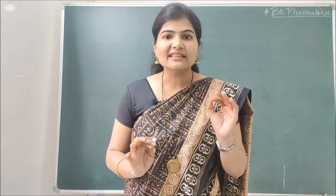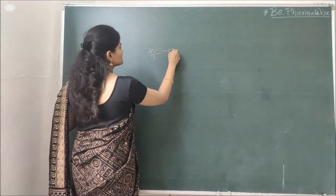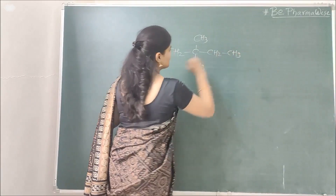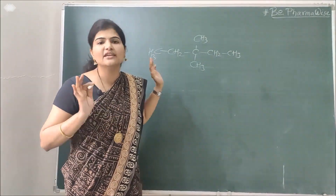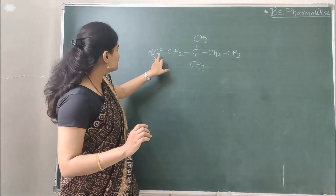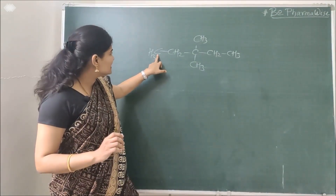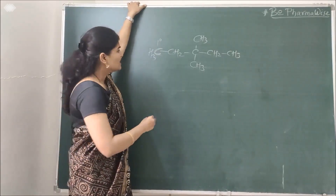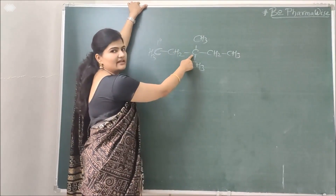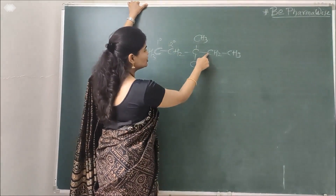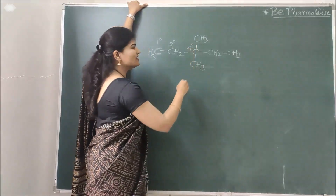You should understand that there are different kinds of carbons in an organic compound. Consider a structure like CH3-CH2-C(-CH3)(-CH3)-CH2-CH3. In this simple alkane molecule, there are different types of carbons. For example, a terminal carbon attached to one other carbon atom is classified as a primary carbon atom. A carbon attached to two other carbons is called a secondary carbon atom. A carbon attached to three other carbons is a tertiary carbon atom. And a carbon attached to four other carbon atoms is called a quaternary carbon atom.